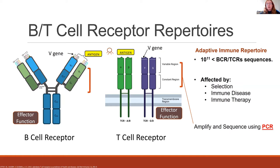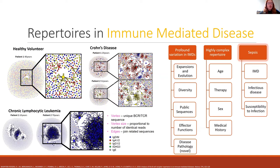To study these B and T cell receptor repertoires, we use polymerase chain reaction — which we're all very familiar with from COVID testing — to amplify or enrich for these sequences, which I then sequence on a high-throughput scale. I've shown on this slide examples of repertoires in different immune-mediated diseases: a healthy volunteer, Crohn's disease, and chronic lymphocytic leukemia. Each node is a unique B cell receptor sequence; nodes are connected when they differ by just one sequence. When you see clusters, that suggests a clone is responding and multiplying in response to a pathogen, diversifying to improve affinity. A healthy individual should have relatively diverse representation with a characterized distribution of different effector functions.